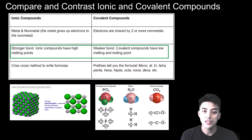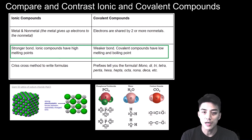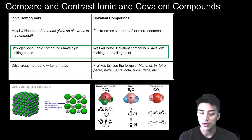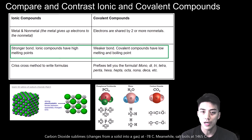Ionic compounds are held together by strong electrostatic forces between oppositely charged ions. This results in a crystal lattice structure such as the one seen in sodium chloride, and it explains their unusually high melting point. On the other hand, covalent bonds are much weaker than ionic bonds because the electrons are being shared by the atoms. This results in unusually low melting and boiling points — for carbon dioxide, its sublimation point, the point at which it turns from solid to gas, is negative 78.5 degrees Celsius. Meanwhile, sodium chloride will only boil if it reaches an extremely high temperature of 1465 degrees Celsius.